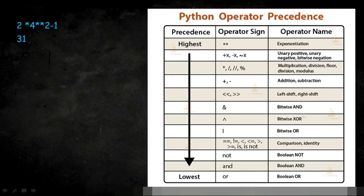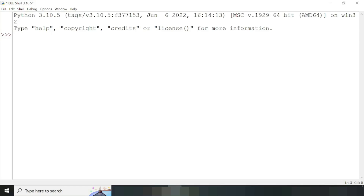Now let's look at operator precedence. If we have an expression, the exponential operator has the highest precedence, so Python calculates 4 to the power 2 first, which is 16. Next is multiplication, so Python calculates 2 multiplied by 16, which is 32. Then it performs subtraction: 32 minus 1, which gives 31 as output. You can verify this — if I press enter it returns 31.